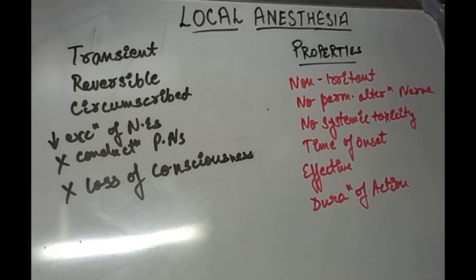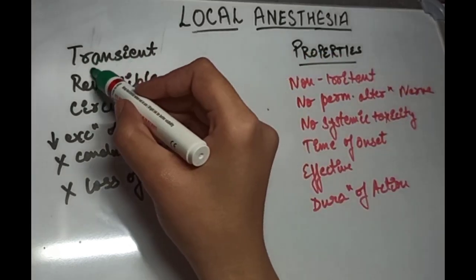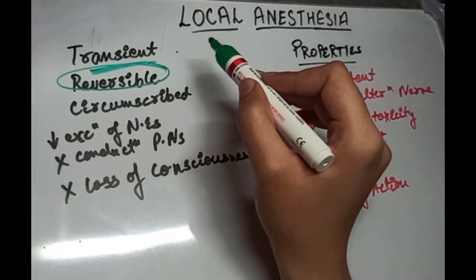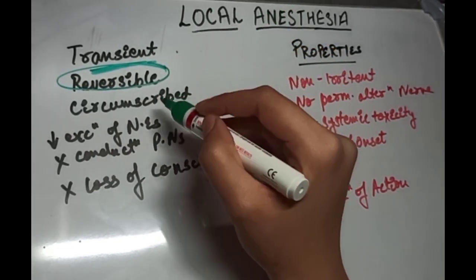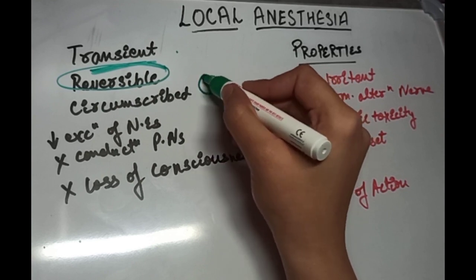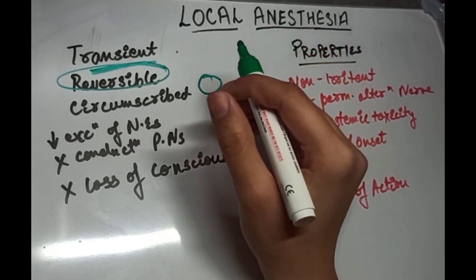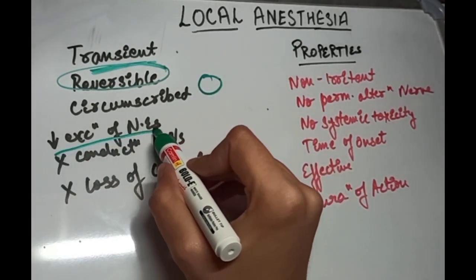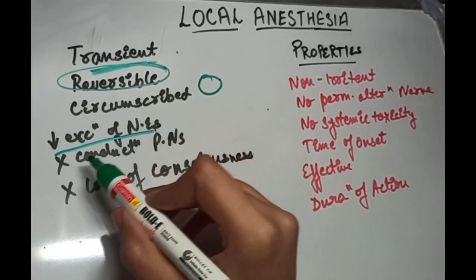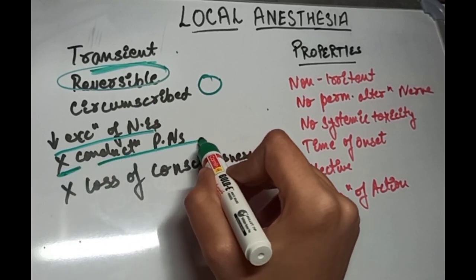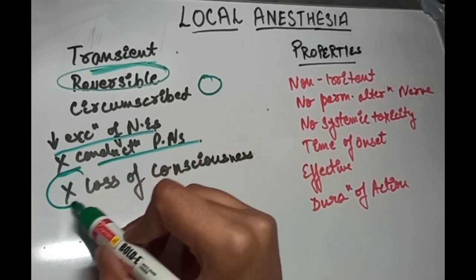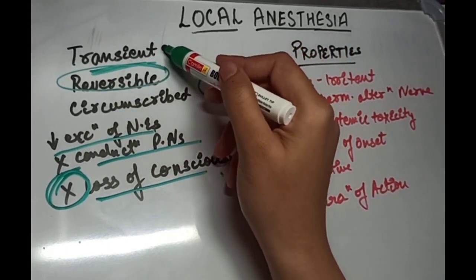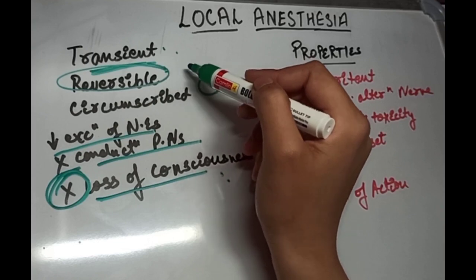Local anesthesia can be defined as a transient, that is short-lived, reversible — it is reversible and not permanent — loss of sensation in a circumscribed area of the body, caused by either the depression of the excitation of the nerve endings or an inhibition in the conduction process of the peripheral nerves, without the loss of consciousness.